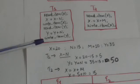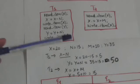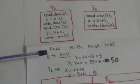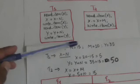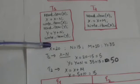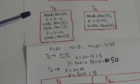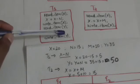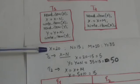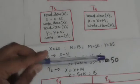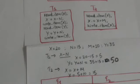Transaction T1 subtracts n (that is 15) from x. The value of x is 20, so after subtracting 15 the value of x becomes 5. After this, T1 adds n (15) to y. The value of y is 35, so when 15 is added, the value of y becomes 50.